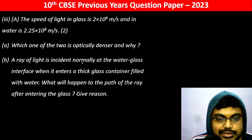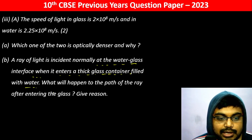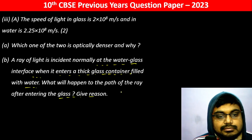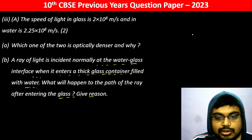A ray of light is incident normally at the water-glass interface and it enters a thick glass container filled with water. What will happen to the path of the ray after entering the glass? The reason — light is incident normally at the water-glass interface.